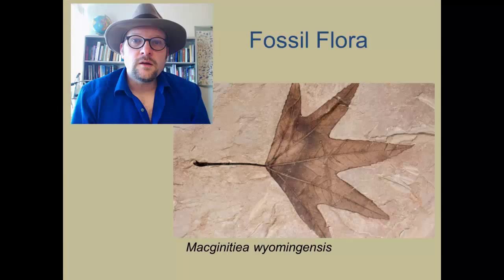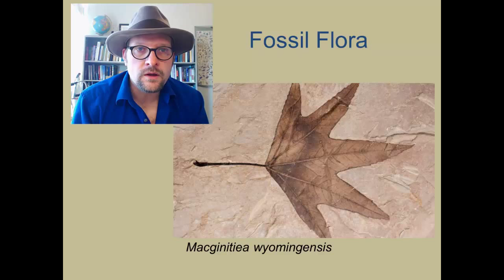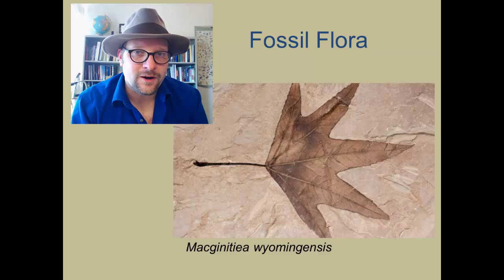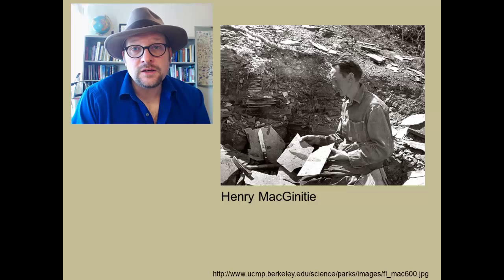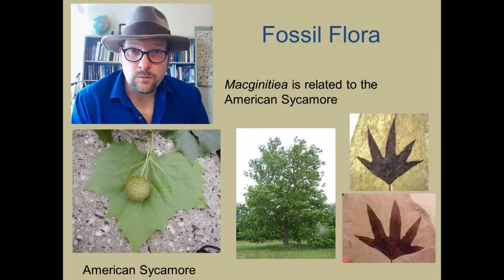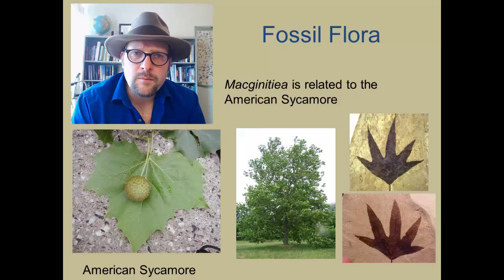Today we will talk about the fossil plants from the Green River Formation, and use that information to reconstruct what eastern Utah may have looked like 50 million years ago. The first and most characteristic fossil leaf is McGinniae, notable for its multi-pronged leaf margins. Named after American paleontologist Henry McGinniae, it is related to the American sycamore tree, which today only lives in the eastern United States. Its occurrence in the western part of North America during the Eocene indicates a much warmer and more temperate climate for Utah, Wyoming, and Colorado.